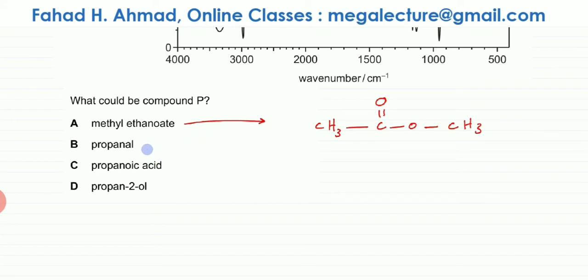The next one is propanal. Propanal is prop, three carbon atoms, so it's going to be three carbon atoms and it's an aldehyde, so that means it's going to be double bond O and H. You can add in the hydrogen CH2.